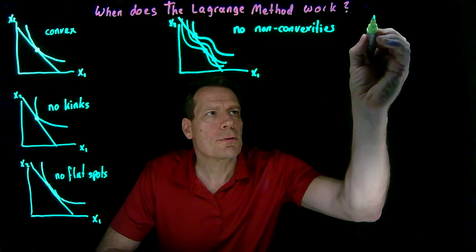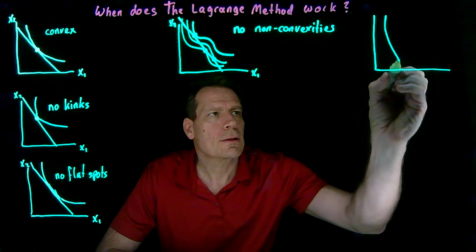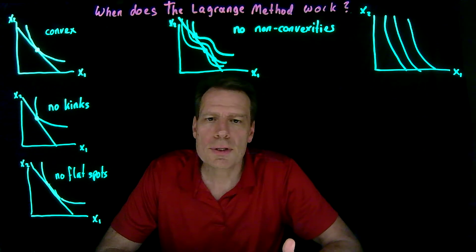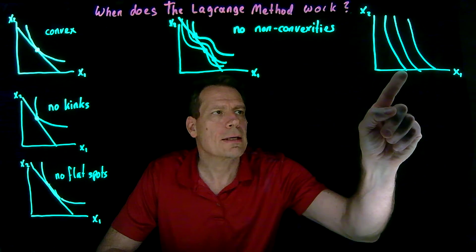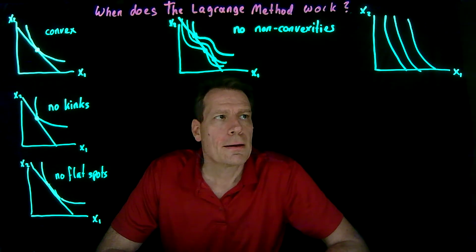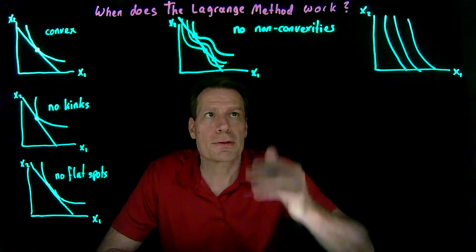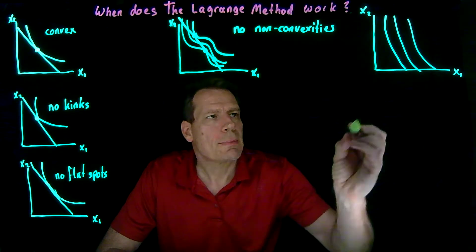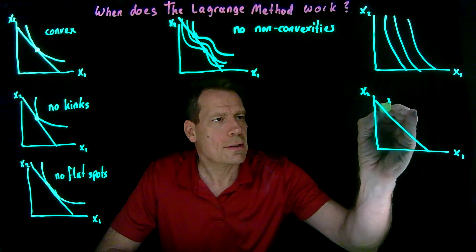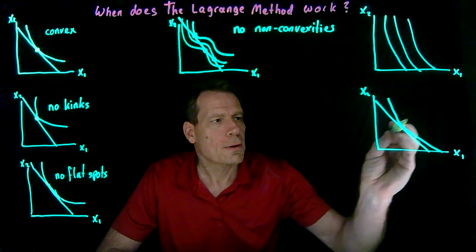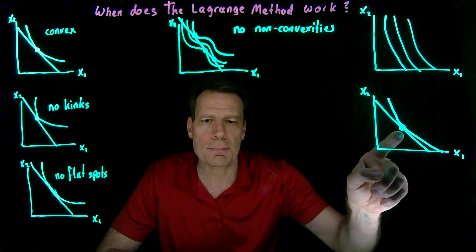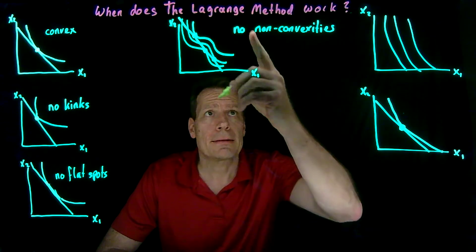Finally, we might have indifference curves that cross the axes — indifference curves that look like this. In that case, one of the goods is not essential. In this case, x2 is not essential because you can get more and more utility by just getting x1, and you don't need to have any x2. When we have indifference curves that cross the axes but are still convex with no flat spots and no kinks, we might get one of two situations. One situation is where there's still a tangency on the budget line — despite the fact that the indifference curve crosses the axis, there's a tangency, in which case that's the optimal consumption bundle. You can't get to any higher indifference curve than that, and the Lagrange method would pick it up.